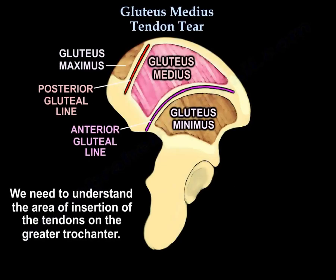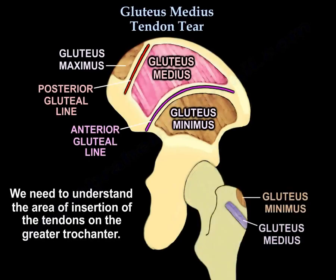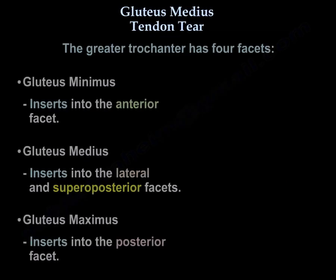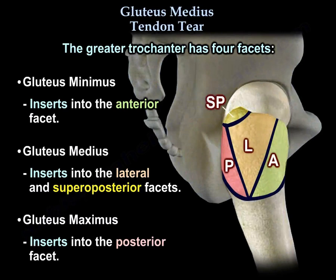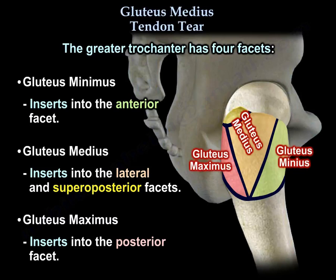For treatment of gluteus medius and minimus tears, we need to understand the area of insertion of the tendons on the greater trochanter. The greater trochanter has four facets: the gluteus minimus inserts into the anterior facet, and there are lateral and superoposterior facets where the gluteus medius inserts. There is also a posterior facet for the gluteus maximus.